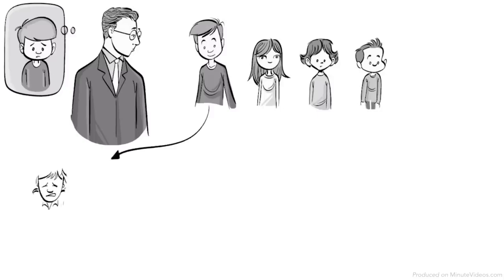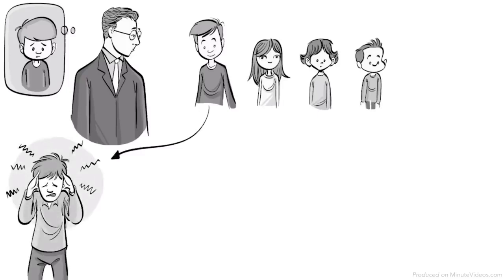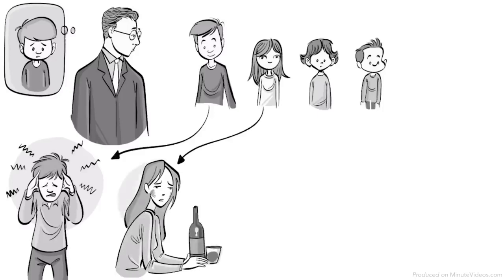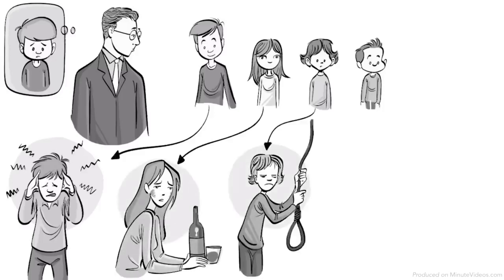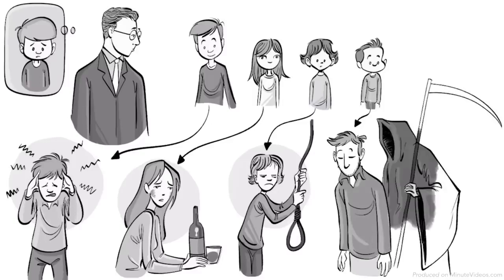John complained throughout his entire life about intolerable headaches and died early in his 50s. Mary developed a drinking problem and attempted suicide, like her brother James. William took his own life at age 40.